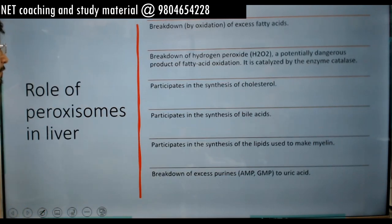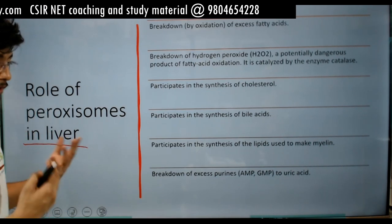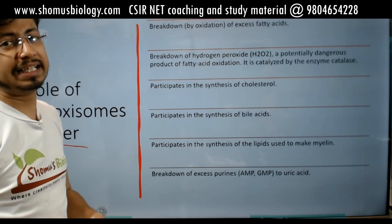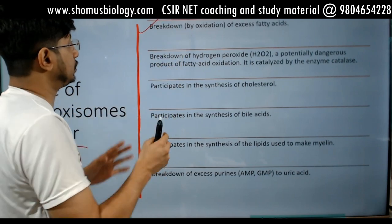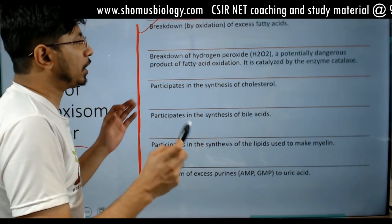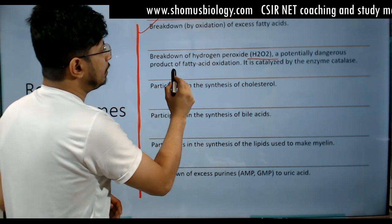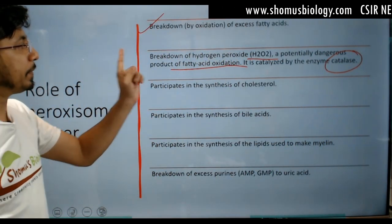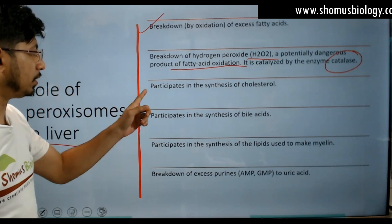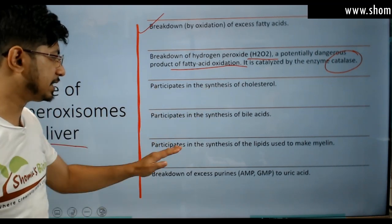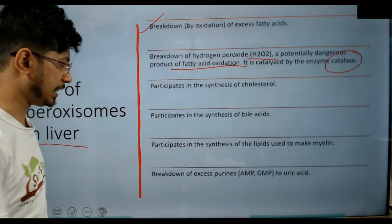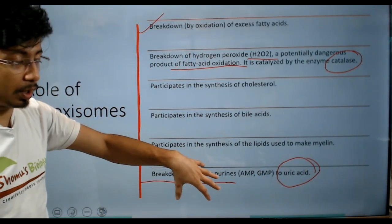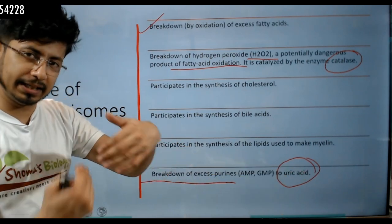The role of peroxysomes in the liver: breakdown of excess fatty acids is very, very important. When excess fatty acids are present in the liver, they are broken down by paroxysomes present in the liver. They also break down hydrogen peroxide H2O2, a potentially dangerous product of fatty acid oxidation — this is catalysed by the enzyme catalase. They participate in synthesis of cholesterol, synthesis of bile acids, synthesis of lipids, and breakdown of excess purines to uric acid. Excess purines that are present — which can be toxic in the liver — are broken down into uric acid and released from the body.